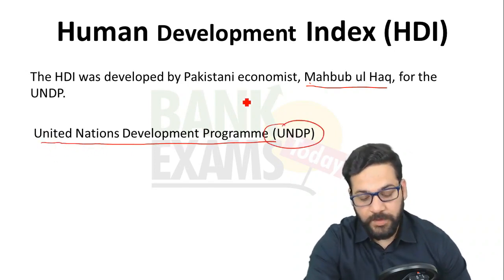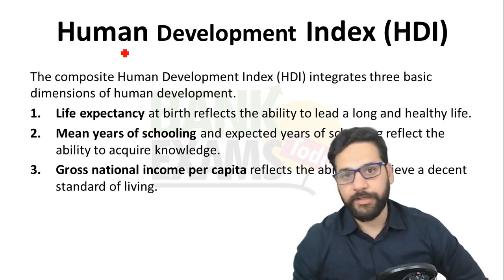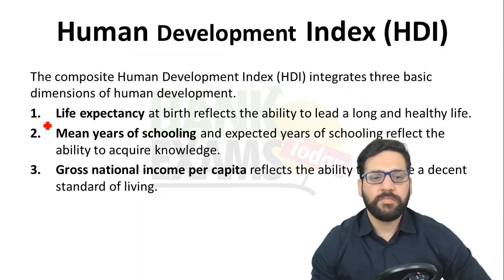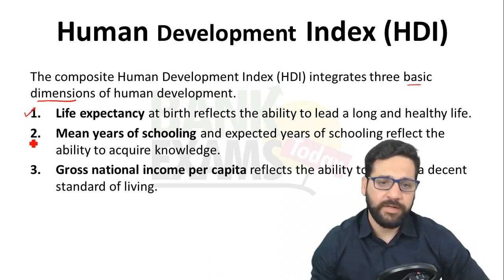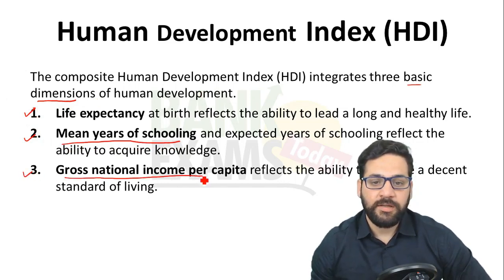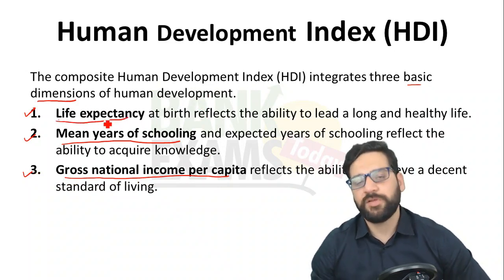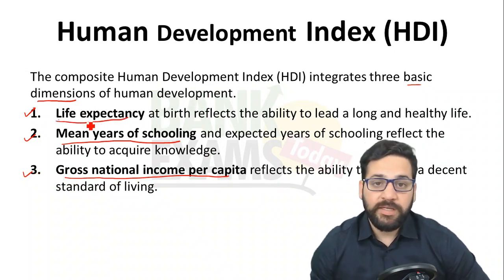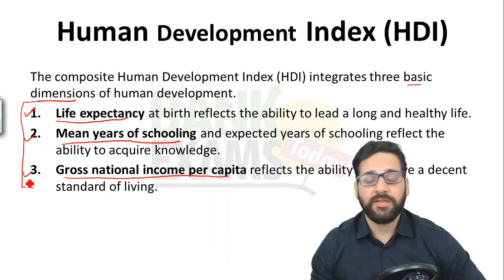Let's look at how the Human Development Index is calculated. There are three basic dimensions: the first one is life expectancy, the second one is mean years of schooling, and the third one is gross national per capita income. The geometrical mean of these three dimensions is the HDI.